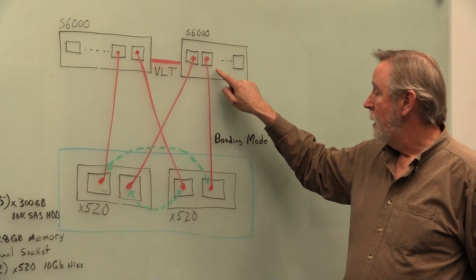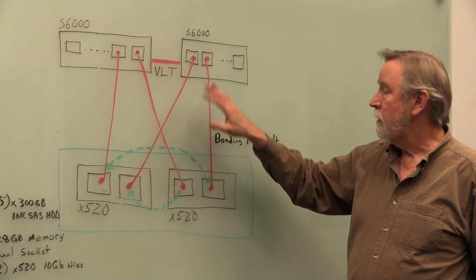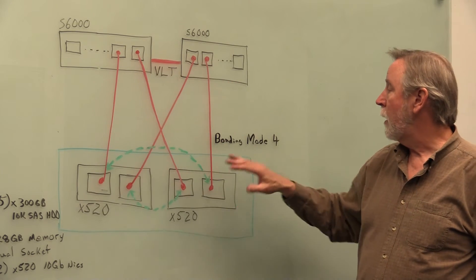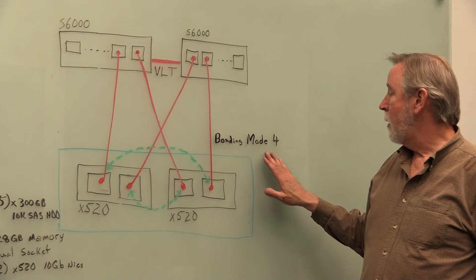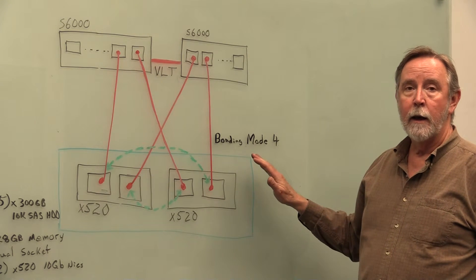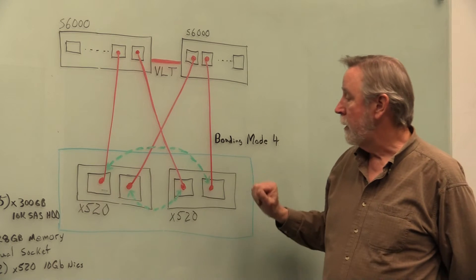So that of course gives us a 20 gigabyte throughput channel. Now we're using bonding mode 4 down here, which is a mode that gives us both load balancing and a failover, high availability mode.